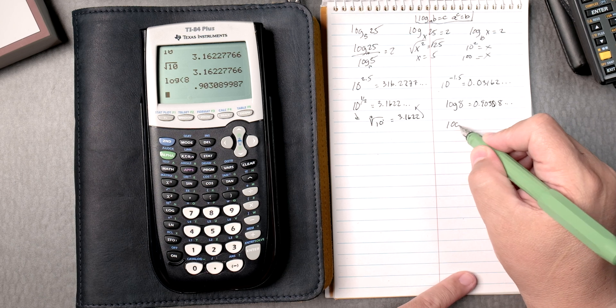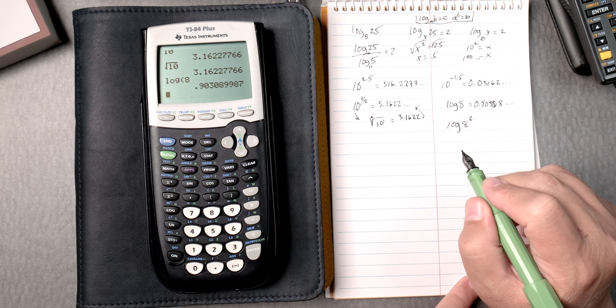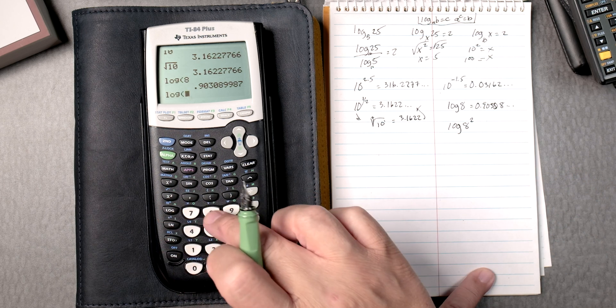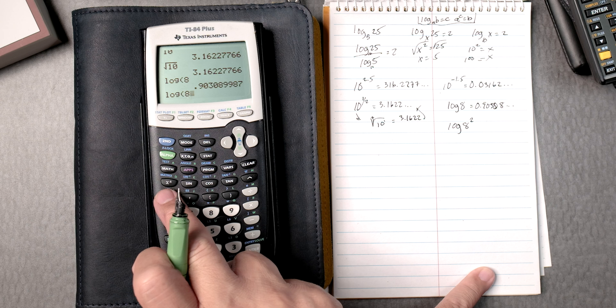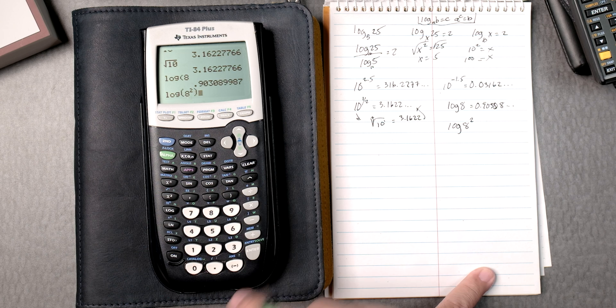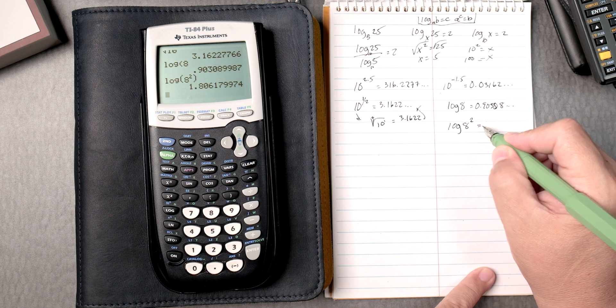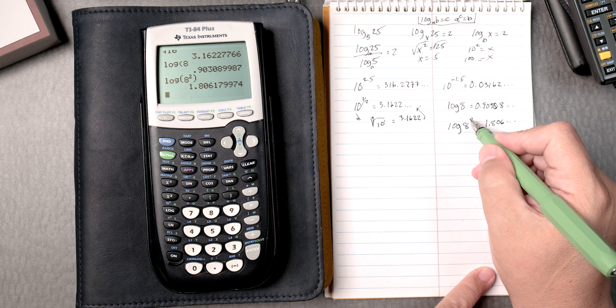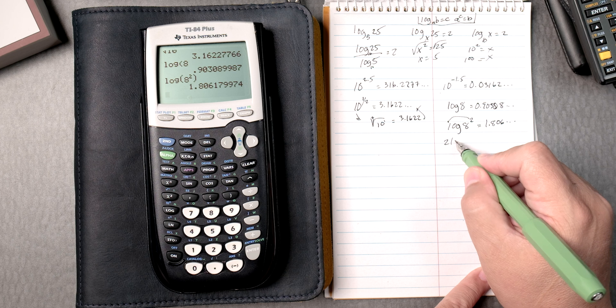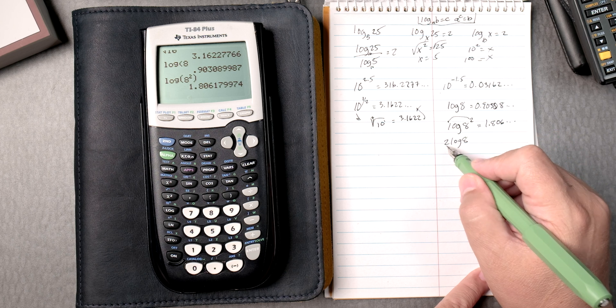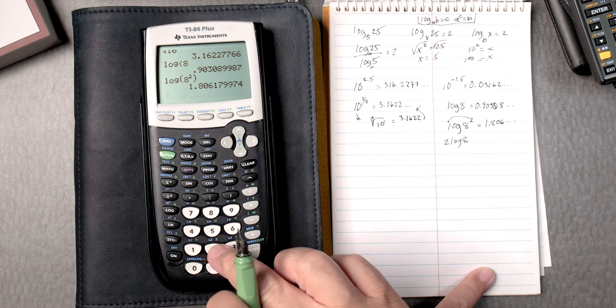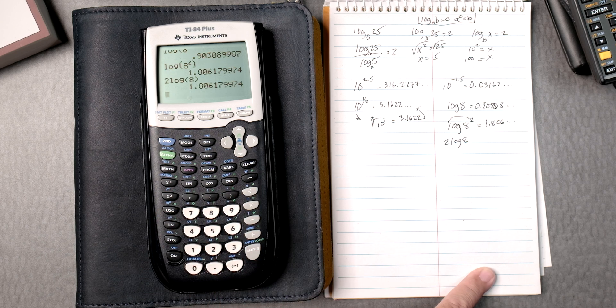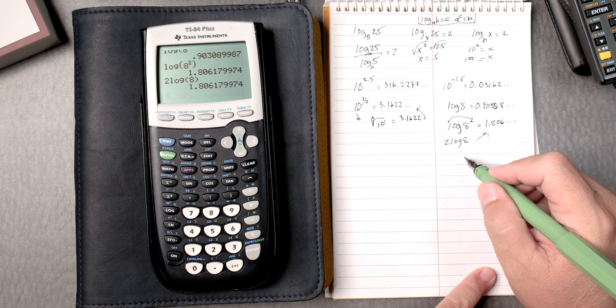Okay, how about the log of 8 squared? All right, that can be done. We go log 8, and we can use the square button if we like. We close it, we enter it, and it gives you 1.806, it keeps going. There's a rule that says that the 2 can go down, and it gives you the log. This 2 goes down, log, a 2 log of 8. So 2 log 8, you can close it if you like, enter, gives you the same answer. Interesting, right?